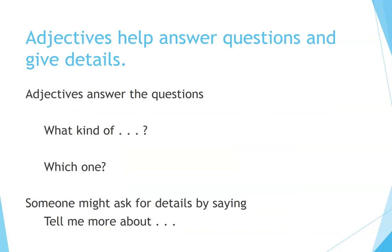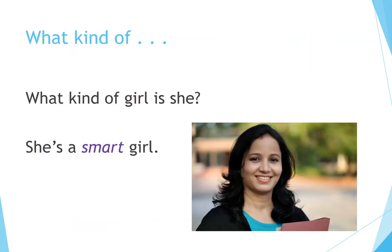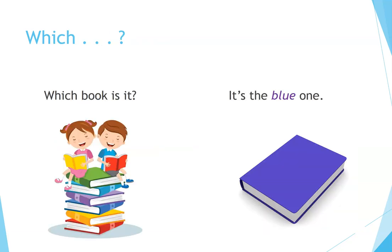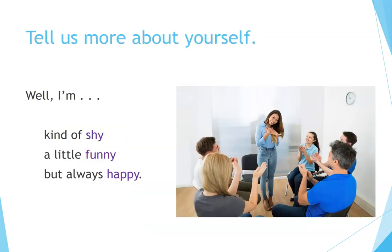Adjectives help answer questions and give details. Adjectives answer the questions 'what kind of' and 'which one.' Someone might ask for details by saying 'tell me more about.' What kind of girl is she? She's a smart girl. Which book is it? It's the blue one. Tell us more about yourself. Well, I'm kind of shy, a little funny, but always happy.